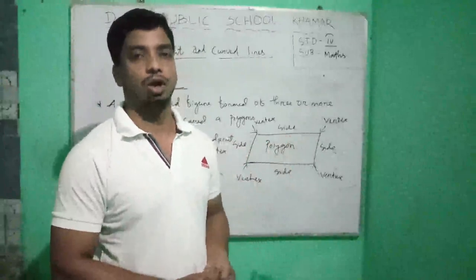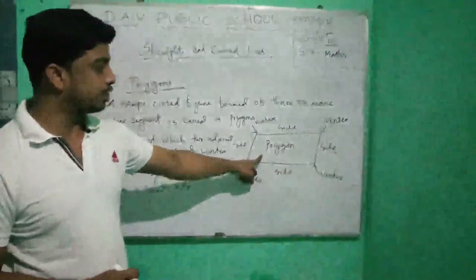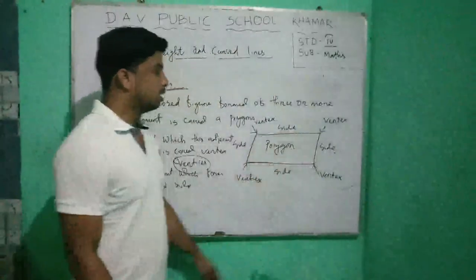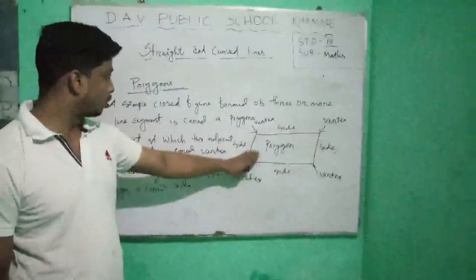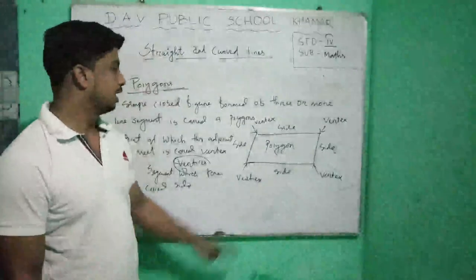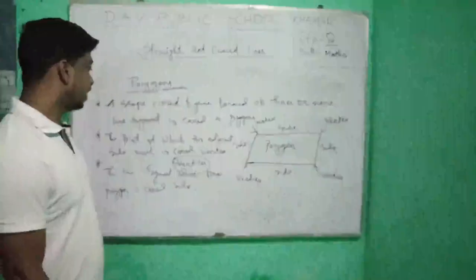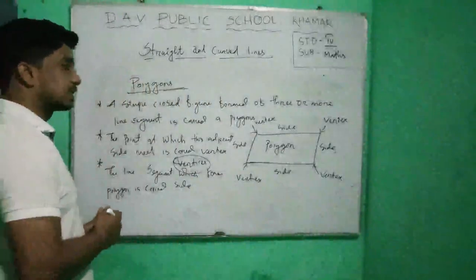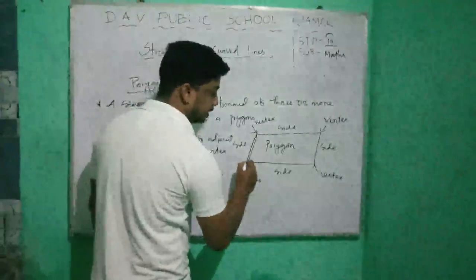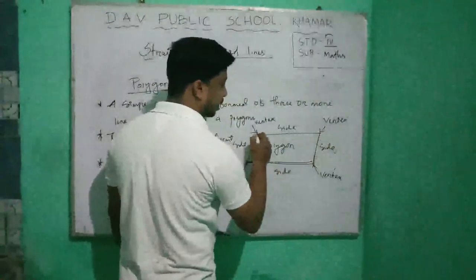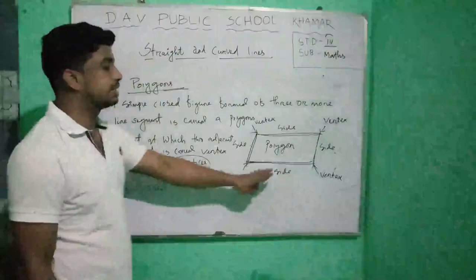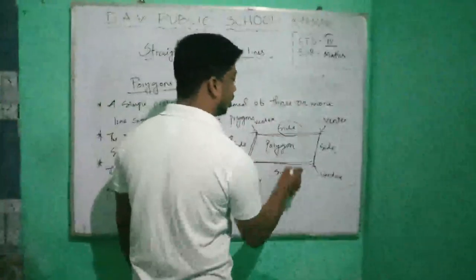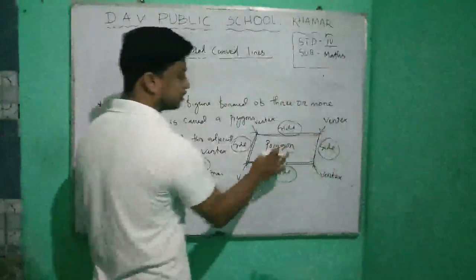Here is a picture of a polygon. It has four line segments, so it is a simple closed figure and it is also called a polygon. The line segments which form a polygon are called sides. So here are four line segments, and these line segments form a polygon, so these are called sides. This polygon has four sides.